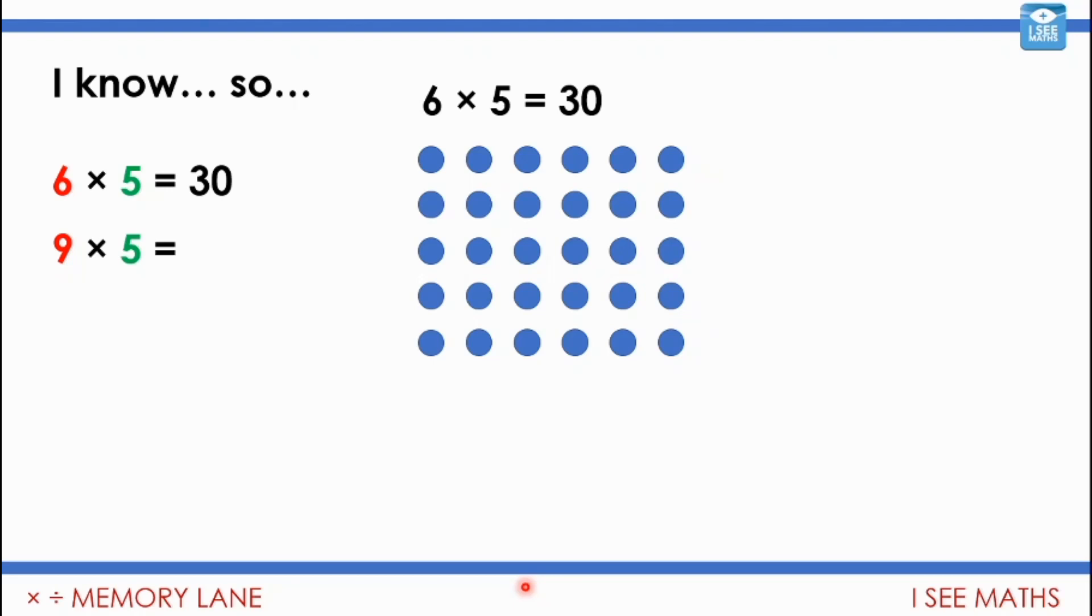To start off, a few weeks ago we used 'I know so' when we were looking at multiplication. We used examples like 6 times 5 equals 30, which we could see with this array. So what will 9 times 5 be, and how will the picture be different? Will we have more sixes or more fives?